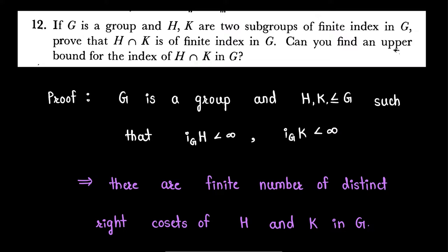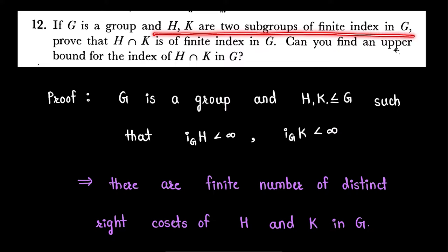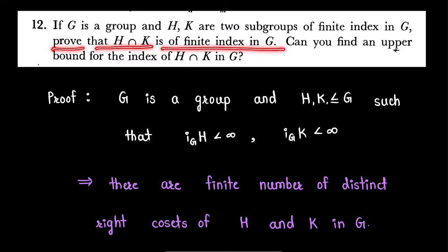Hello friends, in this video I am going to solve an exercise question from the book Topics in Algebra. The question is: if G is a group and H, K are two subgroups of finite index in G, prove that H intersection K is of finite index in G.